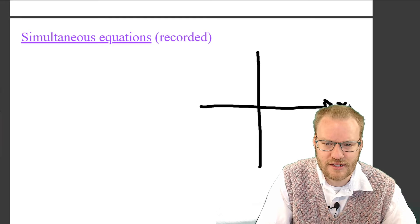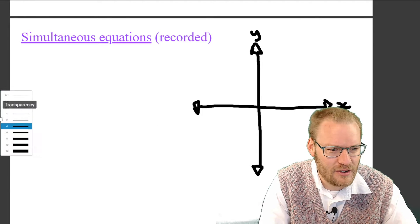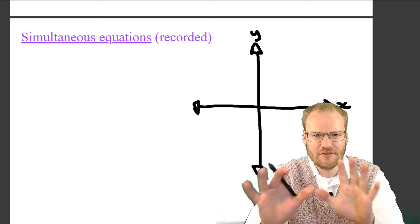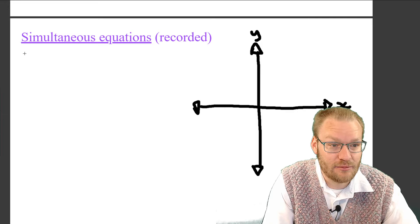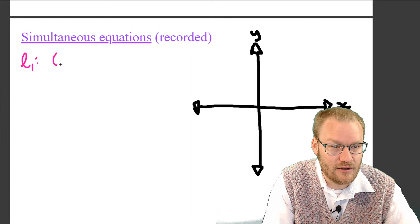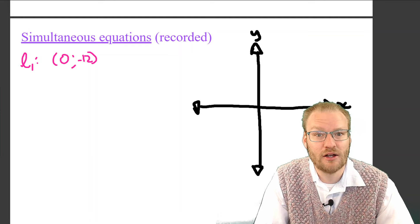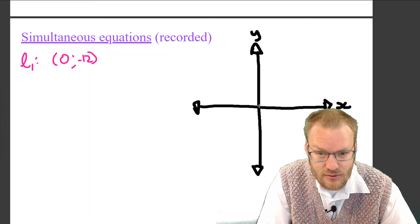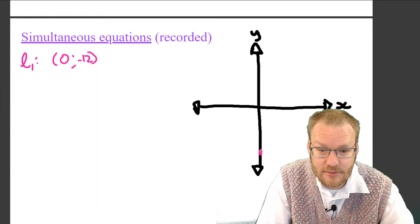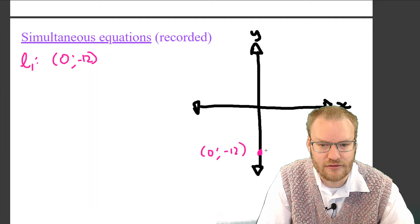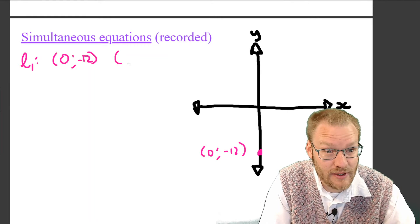Let's draw a thick set of Cartesian plane axes as our starting point. For line one, we know two points that lie on the line. We've got zero, negative twelve — zero along the x-axis means we haven't gone left or right, and negative twelve means it's sitting somewhere down here. We don't have a scale, so I won't say that distance is exactly twelve.